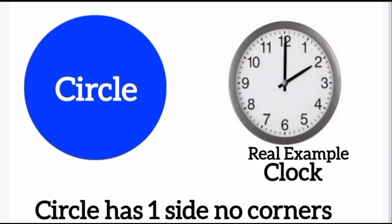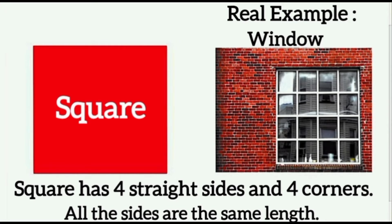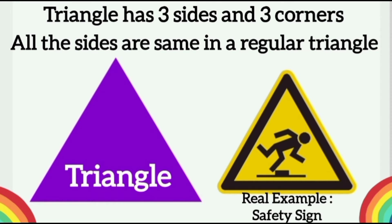Square: a square has four straight sides and four corners. All the sides are the same length. A real example of a square is a window. Triangle: triangle has three sides and three corners.